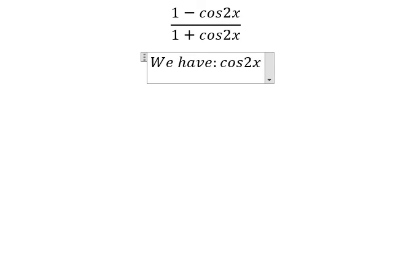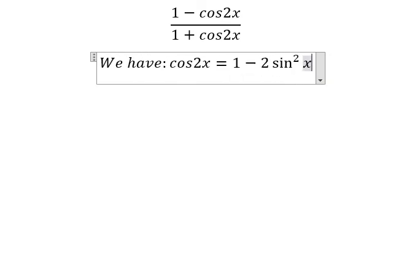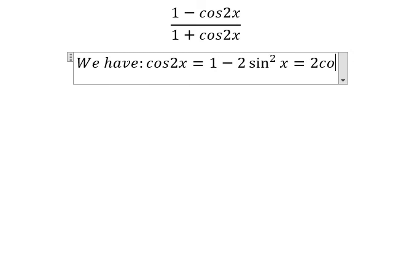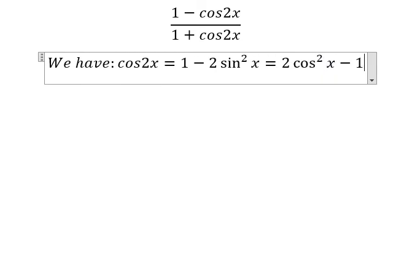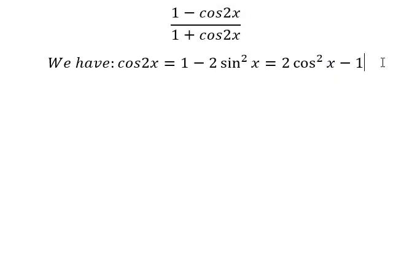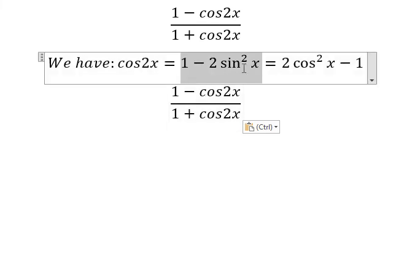Cosine 2x equals 1 minus 2 sine squared x, which also equals 2 cosine squared x minus 1. For cosine 2x, I will choose this formula.